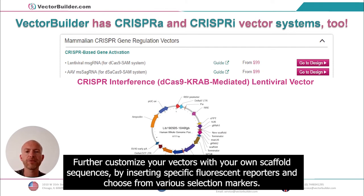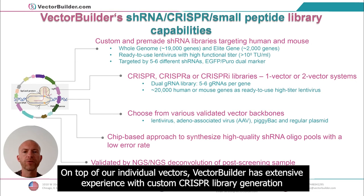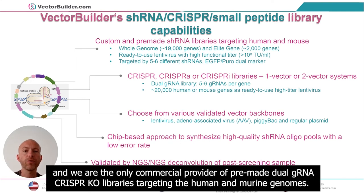Further customize your vectors with your own scaffold sequences by inserting specific fluorescence reporters and choose from various selection markers. On top of our individual vectors, VectorBuilder has extensive experience with custom CRISPR library generation, and we are the only commercial provider of pre-made dual-gRNA CRISPR knockout libraries targeting the human and murine genomes.